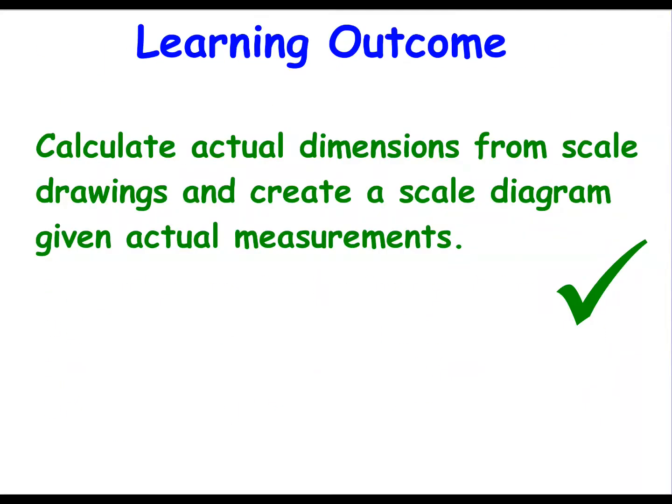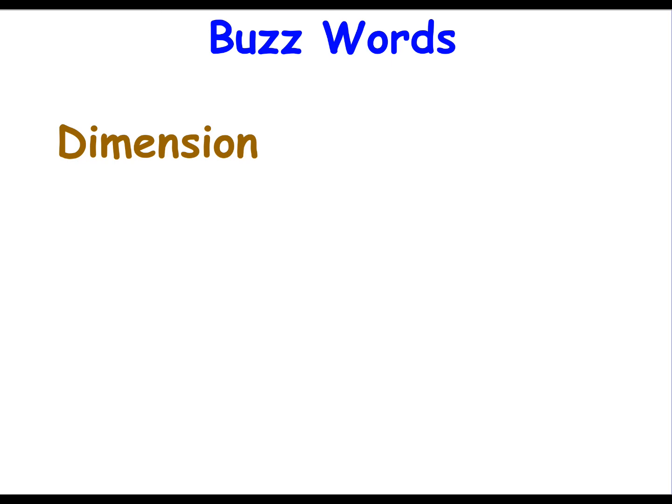And that completes our learning outcome for this lesson. Calculating actual dimensions from scale drawings and creating a scale diagram given actual measurements. So really, we're talking about using the ratio method and the strap line to put what you're interested in one side to work out what you need to draw or read from the map on the other. The only word that you might not be familiar with is dimension. And a dimension is just a length measurement with respect to scale drawings.